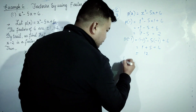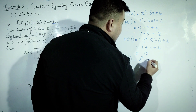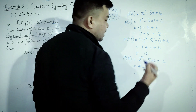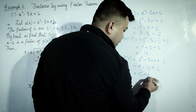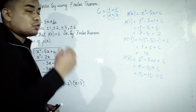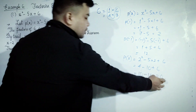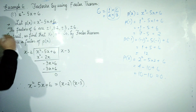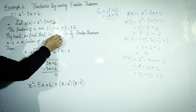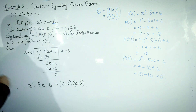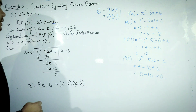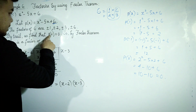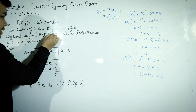Next, we have P(2). So P(2) = 2² - 5(2) + 6 = 4 - 10 + 6. Ten minus ten is equal to zero. So we have P(2) = 0, which means (x - 2) is a factor.